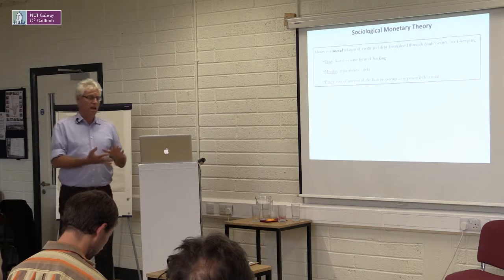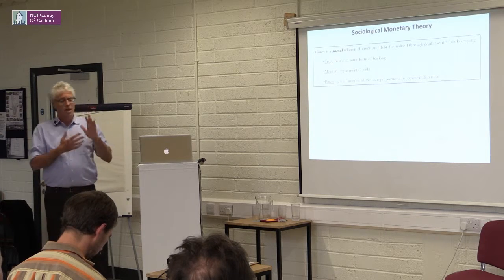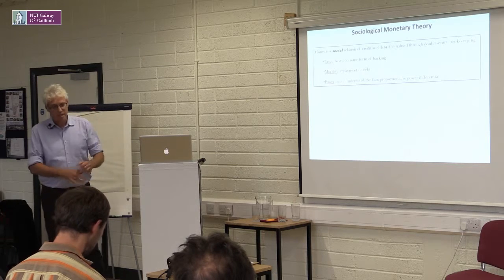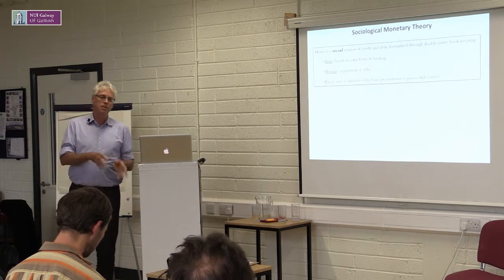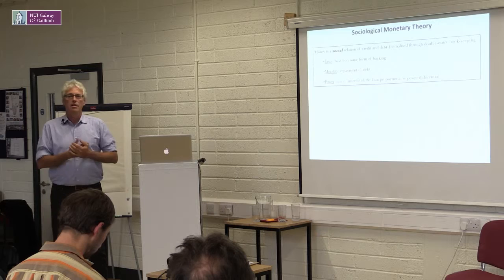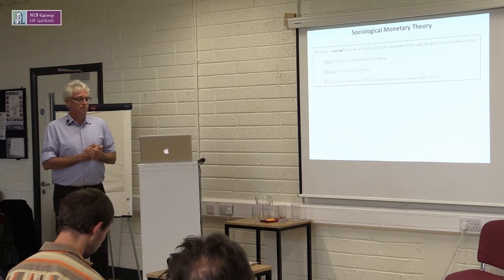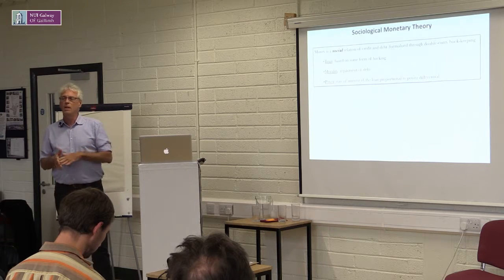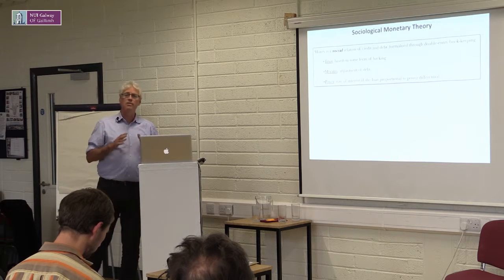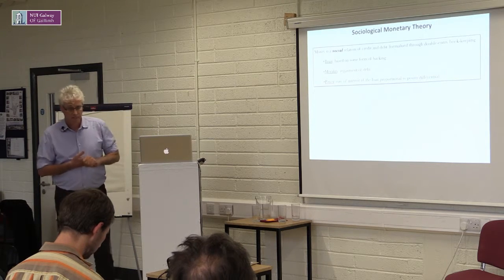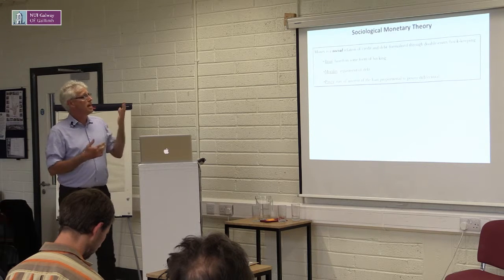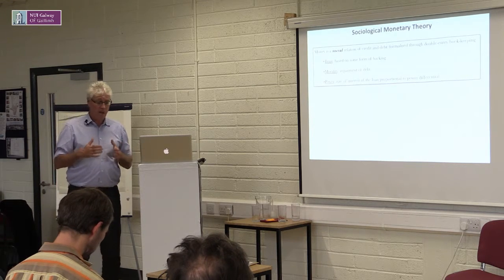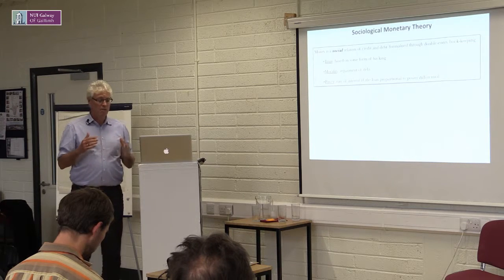Of course Marx studied it, Simmel studied it, Keynes studied it extensively, Schumpeter studied it. So there are quite a few sociologists and economists who have studied money, but no agreement in sight. Therefore, today there are still three or four different main strands of monetary theory. The most convincing, I think, is sociological monetary theory. However, we should think of them as working together.